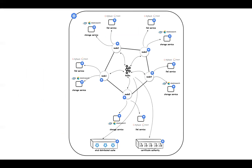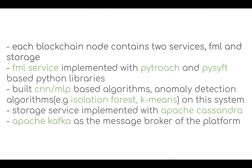For implementation, we built the system on top of blockchain using a microservices-based architecture. There are multiple blockchain peers, each containing two services: a federated machine learning service and a storage service. All federated learning model averaging functions are implemented on top of the federated learning service. The storage service stores all global and local model information as off-chain storage to the ledger. We use a Kafka-based streaming mechanism to handle peer-to-peer communication between blockchain nodes.